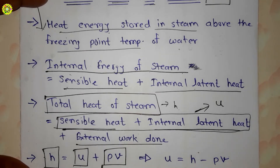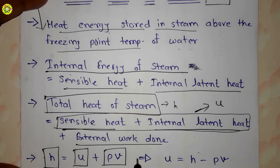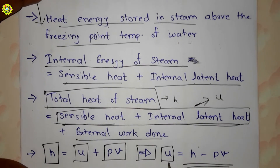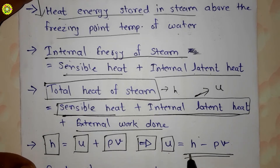Therefore, total heat h equals u plus external work done, which is pv — pressure into specific volume. After simplifying, we get: internal energy u is equal to total heat h minus work done pv, that is u = h − pv.